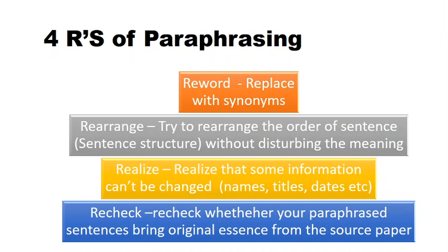The third R is realize: you have to realize that some information cannot be changed — for example, names, titles, and dates. Even if you paraphrase, those should remain as they are; there won't be any changes. The fourth R is recheck: recheck whether your paraphrased sentences bring the original essence from the source paper. That's very important, because after paraphrasing, if your paraphrased sentence doesn't bring the original essence, then it is wrong paraphrasing, so you have to be very careful.